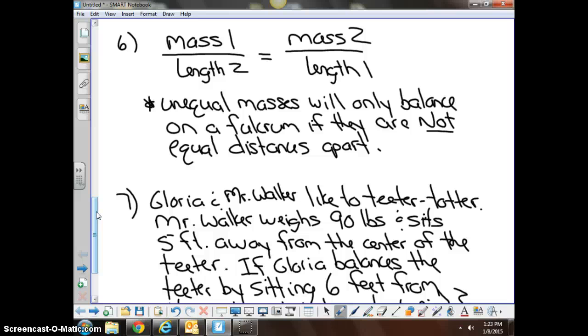Mass 1 over length 2 equals mass 2 over length 1. And what it's telling us here is that unequal masses will only balance on a fulcrum if they are not equal distances apart. So if you have two different masses, if you have two people sitting on a teeter-totter, and they weigh different things, they have different weights, and they sit in equal distance from the middle, obviously the heavier person is going to sink, and the lighter person is going to go in the air.